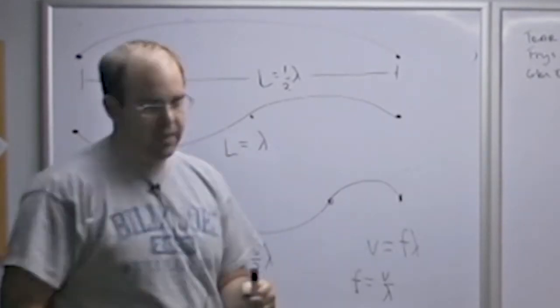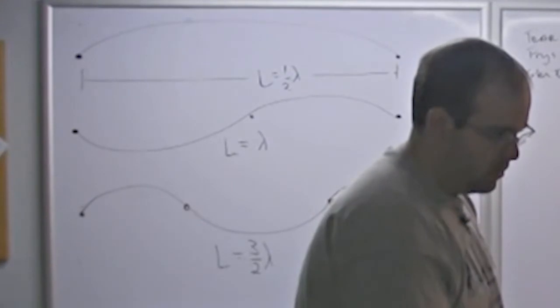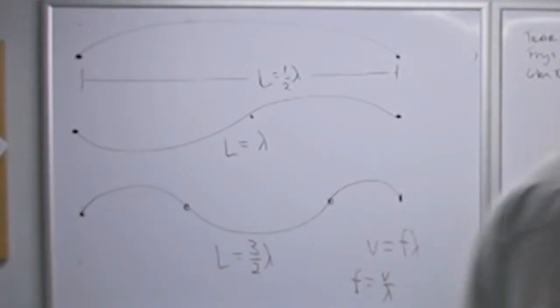Well, for a wave traveling on a string, the wave speed depends on how heavy the string is. The thicker the gauge of the string, the lower the frequency is. It also depends on how tightly wound it is. So if I increase the tension, it goes up.